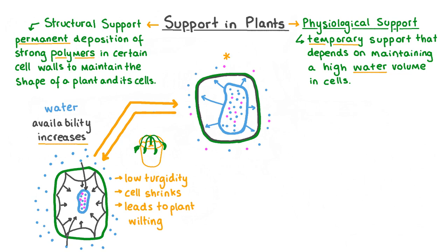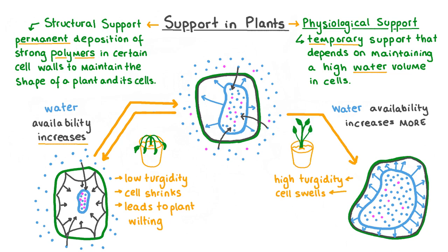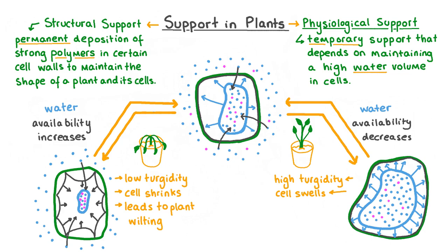But what happens if the water potential continues to increase in the extracellular environment? Even more water molecules will move from the extracellular environment into the plant's vacuole by osmosis. As the vacuole now contains more water molecules, it increases in size, exerting far more turgor pressure upon the cell cytoplasm, pushing the cell membrane against the cell wall and increasing the cell's turgidity. This makes the cell appear swollen. However, this process is temporary, so if water availability decreases once more, the plant could still eventually wilt again.